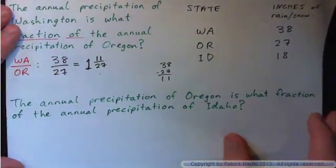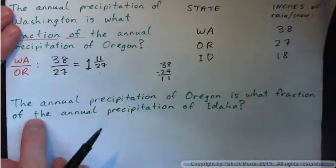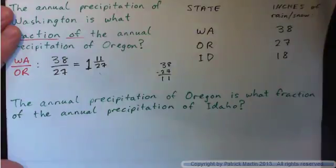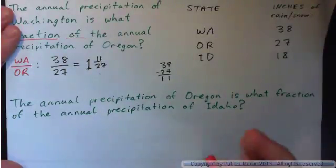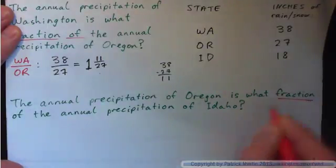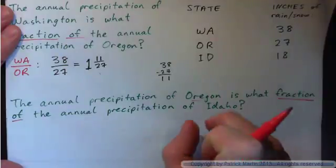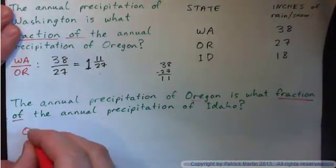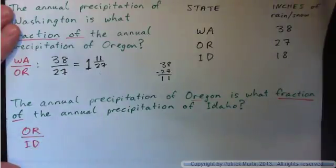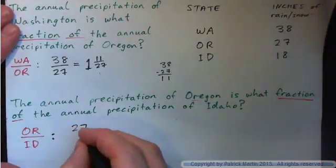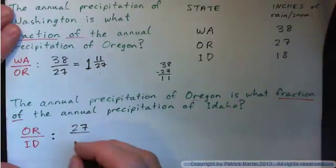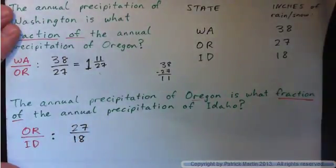Please go ahead and do this one yourself: the annual precipitation of Oregon is what fraction of the annual precipitation of Idaho? Do you do Oregon over Idaho or Idaho over Oregon? It's Oregon is what fraction of Idaho, so Oregon as a fraction of Idaho means Oregon number over Idaho. This is an improper fraction and we need to turn that into a mixed number.